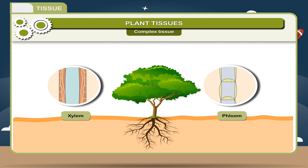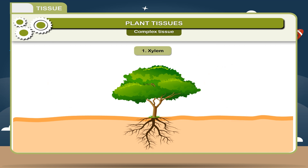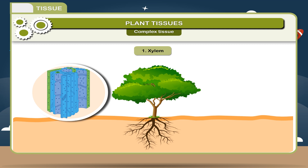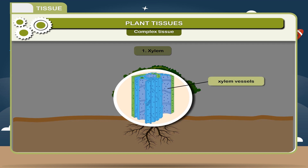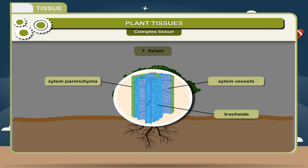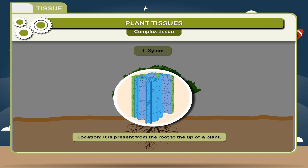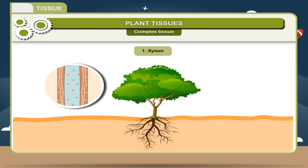Xylem and phloem are conducting tissues that make up the vascular system of the plants. 1. Xylem. Xylem is made up of different types of thick-walled tubular cells: xylem vessels — tube-like structures jointed end-to-end with thickening on their walls; tracheids — elongated, narrow, dead cells; xylem parenchyma; and xylem fibers — long cells with thick walls and narrow cavities. Location: it is present from the root to the tip of a plant. Function: these tissues transport water and minerals absorbed by the roots to the leaves where synthesis of food takes place.